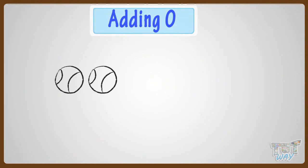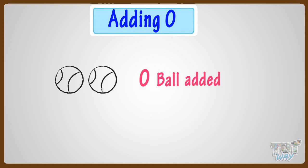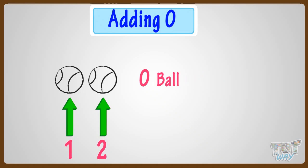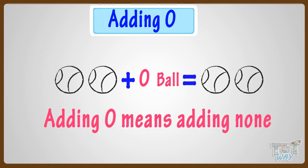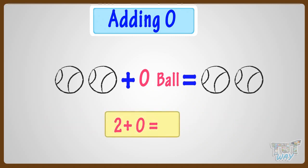Two balls are drawn here. I don't draw any more balls. How many balls are drawn in all now? Let's count! One, two. So, there are two balls now. That is, by adding 0 ball or no ball, the number of balls remain the same. Adding 0 means adding none. We also write this as: 2 balls plus 0 balls or no balls equals 2 balls.